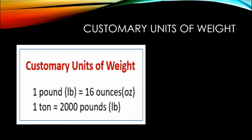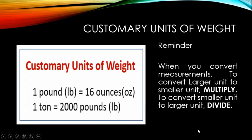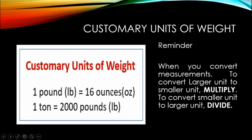And for today's lesson, these are the customary units of weight that you need to familiarize. We have 1 pound equals 16 ounces, and 1 ton equals 2,000 pounds. Always remember: when you convert larger unit to smaller unit, you will do multiplication; when you convert smaller unit to larger unit, you will do division. All customary units of weight on the left side are considered the larger unit, and those on the right side, the second column, are considered the smaller unit.